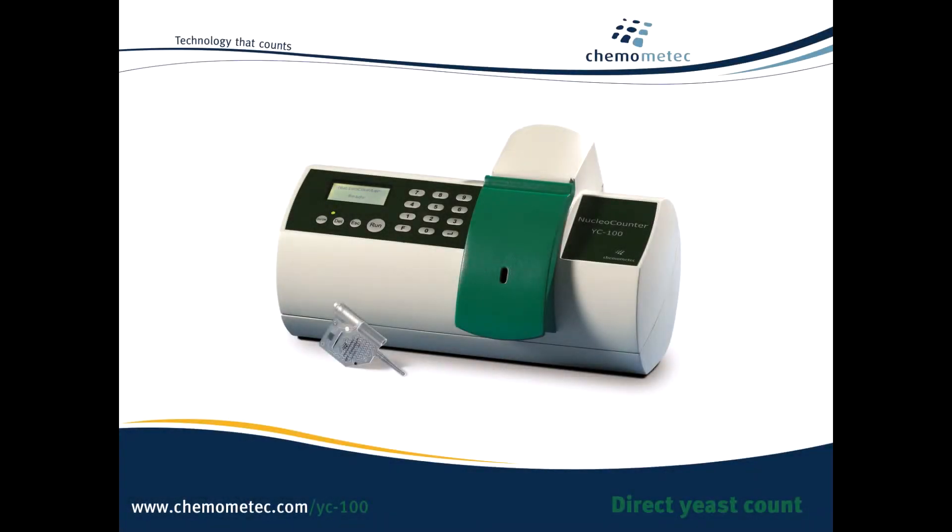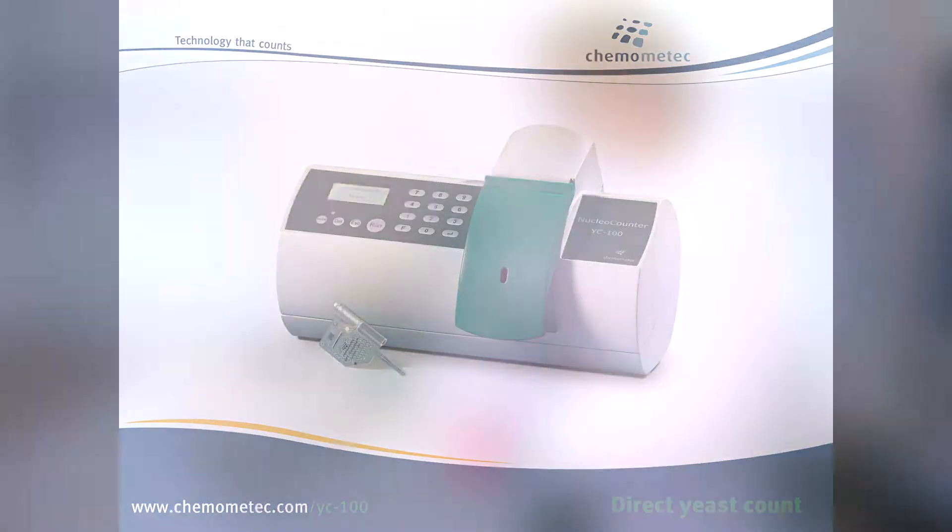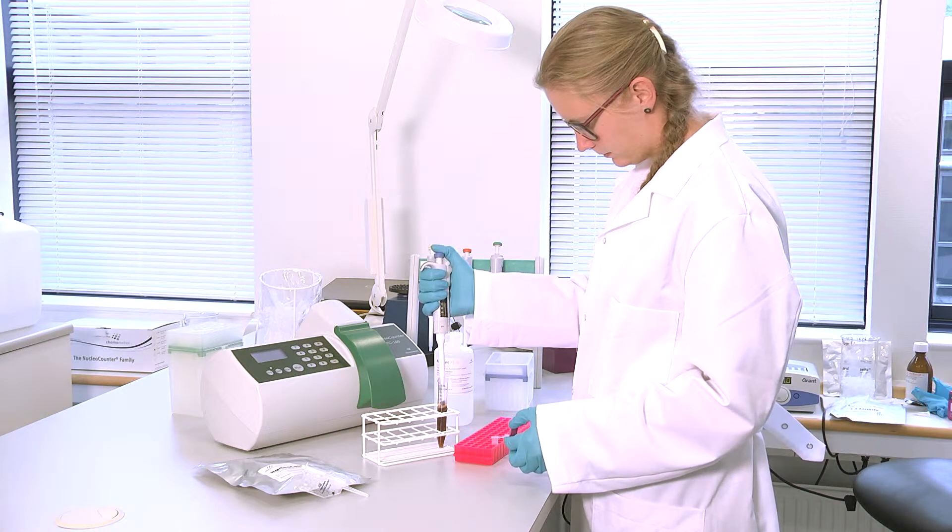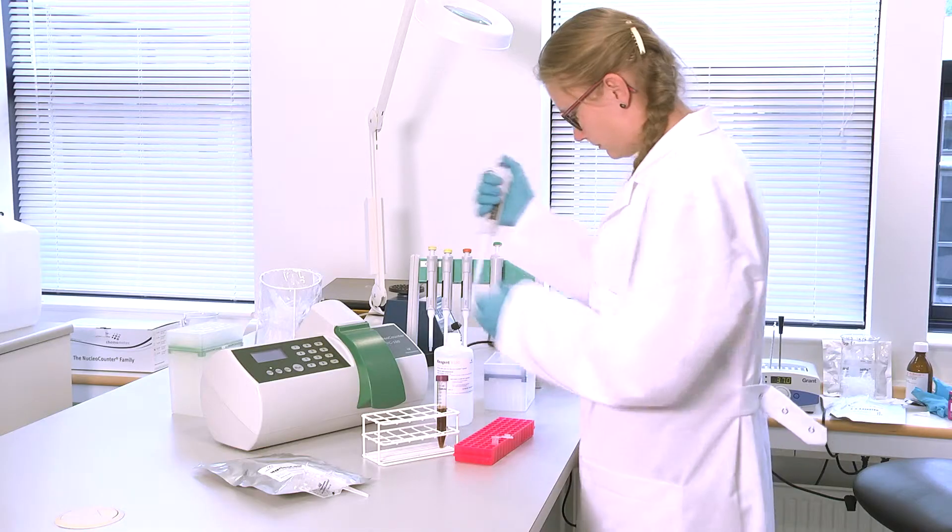The nucleocounter YC100 is the world's easiest yeast counter. It provides the total cell count in 30 seconds and measures percent viability as well.